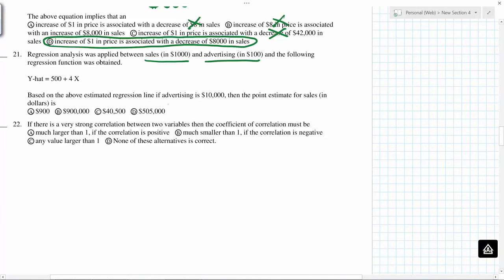So based on the above estimated equation, if advertising is 10,000, so that means, suppose this is x and this is y, so this means x equals 100. Then the point estimate for sales. In this equation, if you say y equals 500 plus 4 times 100, so you get 900.